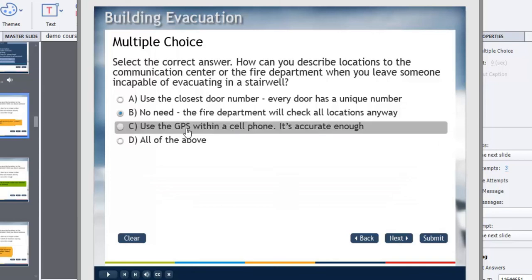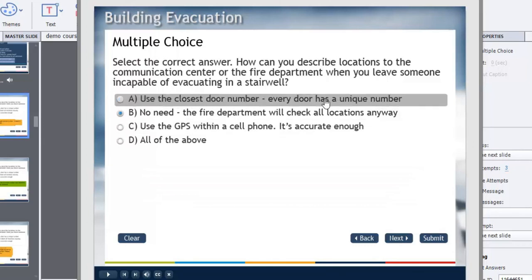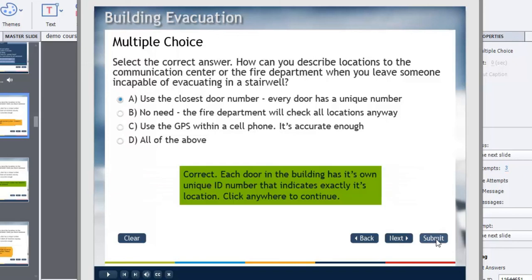So we'll obviously use the GPS within a cell phone, it's accurate enough, or use the closest door number. I think it might be the door number answer. Let's hit submit and see how that is. Correct: each door in the building has its own unique ID number that indicates exactly its location. Click anywhere to continue.